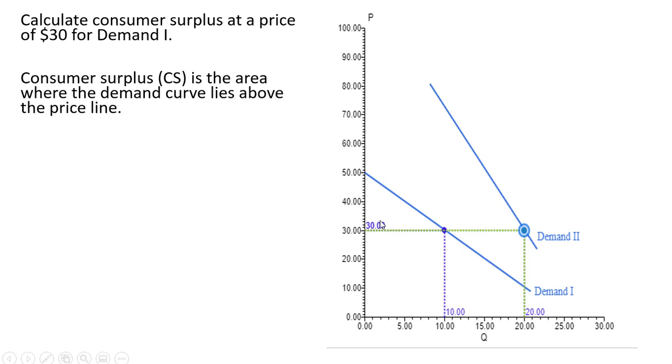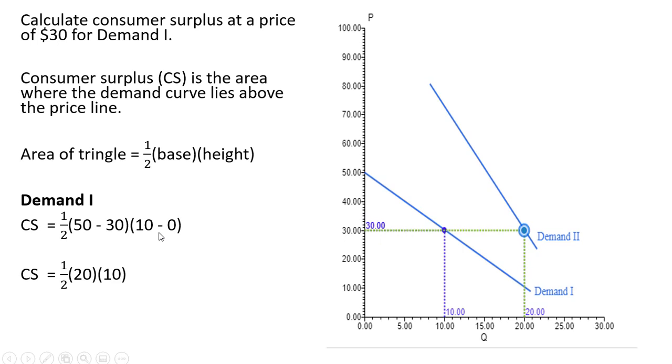That's going to be this area right here. It's going to be an area of a triangle. The area of a triangle is one-half base times the height. For Demand Curve 1, consumer surplus is given by the following: We've got a base here of 50 minus 30, and we have a height here of 10 minus 0. We're going to get 20 times 10 is 200, and then half of that is $100.